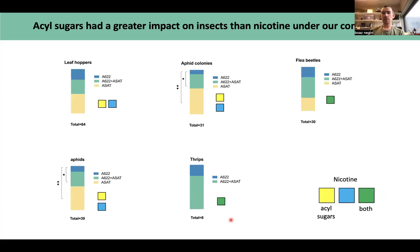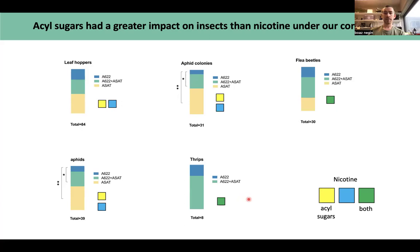I compared the hierarchy between acyl sugar and nicotine statistically. For leafhoppers, there's no statistical difference between acyl sugar and nicotine mutants — they both equally protect the plants. For aphids and aphid colonies, there's significance between ASAT and A622 mutants, meaning acyl sugars protect much more, and adding nicotine to an acyl sugar mutant has no additive effect — but it does the other way around. For thrips and flea beetles, we only see an effect when they're combined — no individual effect, only when both are lost.